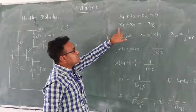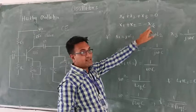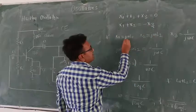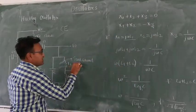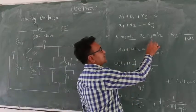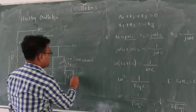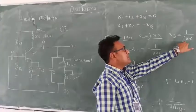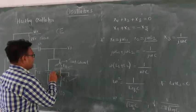So by rearrangement, X1 plus X2 is equal to minus X3. Here, X1 is taken as jωL1 because of inductor. X2 is taken as jωL2 because X2 is an inductor. And X3 is taken as 1/(jωC) because of capacitor.